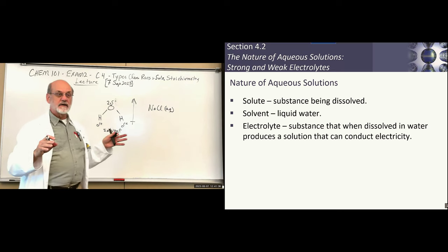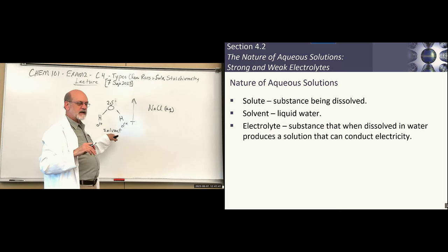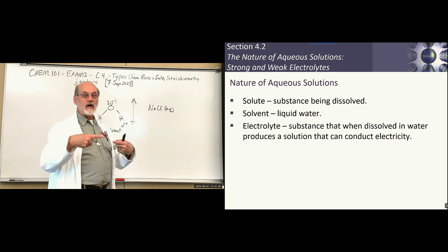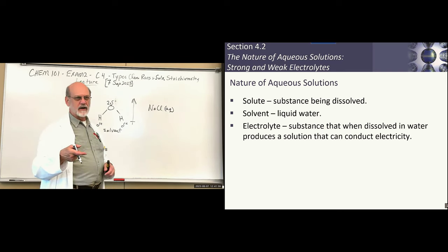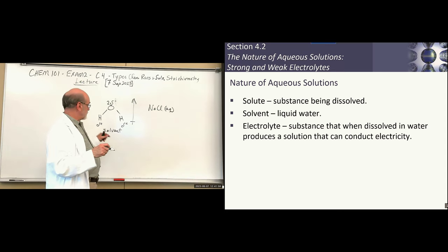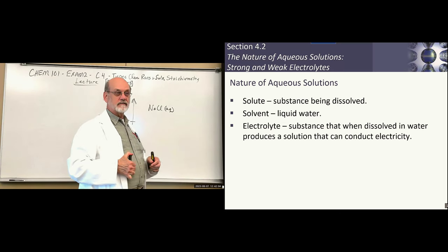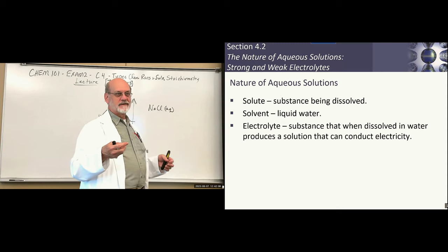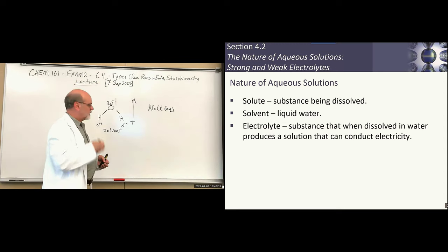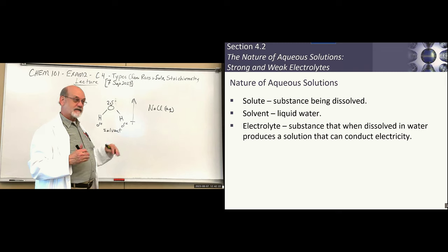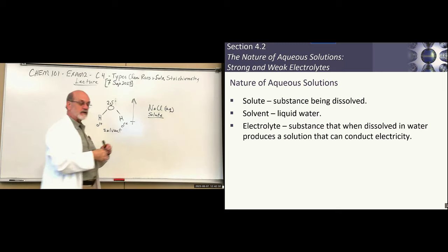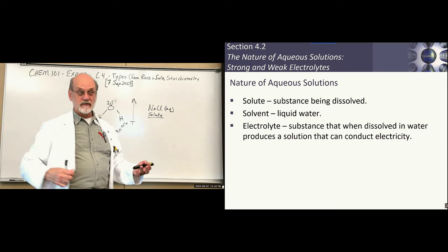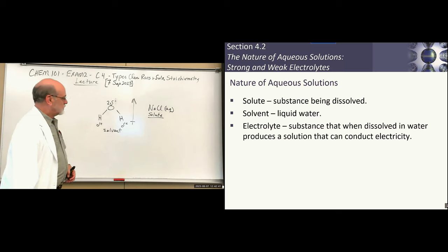Any other solvents: we designate the solvent as the major component when you start dissolving something into it. If water is the solvent and we start adding sucrose — like making hummingbird feeder liquid, which is a one-to-one ratio of water to sugar — we still consider water the solvent, even if you could eventually put in more solute than you have water. The minor component is the solute.